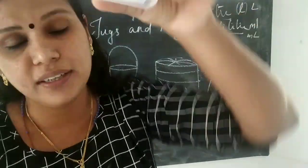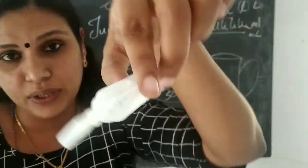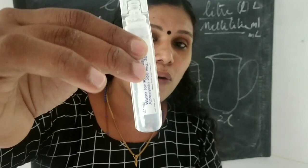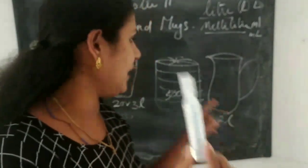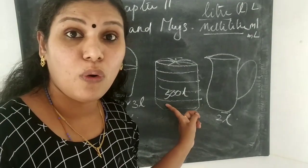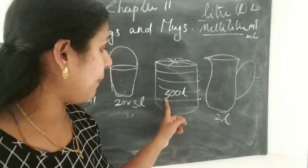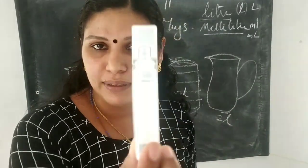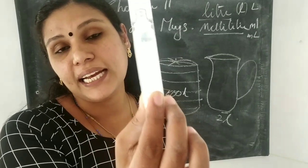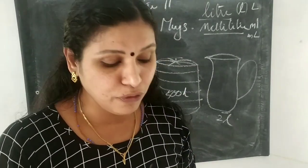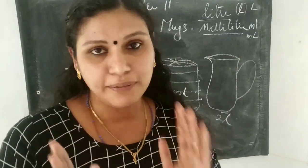This bottle also holds water, but its capacity is very low, so we use millilitres (ml). In contrast, a water tank holds a large amount of water — 500 or 1000 litres. When the capacity is small, we use millilitres. Now you understand the difference between litres and millilitres.